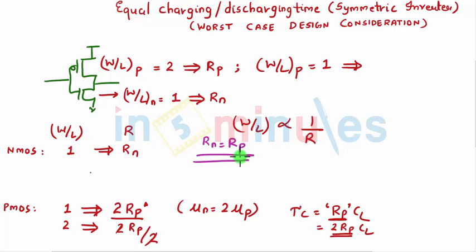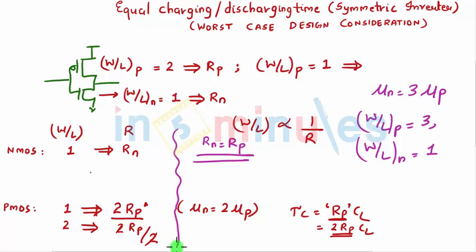So I have equal charging and discharging time. Suppose I would have had mobility as 3 times mu_p, then (W/L) of PMOS would have been 3 when (W/L) of NMOS would have been 1 to get equal charging and discharging. We just understood this. Let's go ahead and complete this table. We will do that after we do a similar type of analysis for a two input NAND gate.